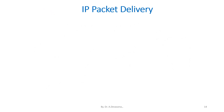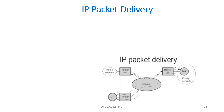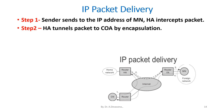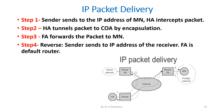In the IP packet delivery diagram, the process is divided into steps 1, 2, 3, and 4. Step 1: Sender sends to the IP address of the MN; HA intercepts packet. Step 2: HA sends packet to the COA by encapsulation. Step 3: FA forwards the packet to the MN. Step 4: Reverse — sender sends to IP address of the receiver; FA is the default router.